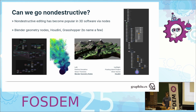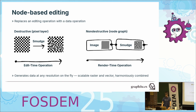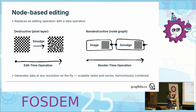Node-based is the second buzzword I mentioned in the introduction. Node-based means that instead of destructively applying an operation to a piece of data, we encode the operation in our document. So we have the smudge operation — just an image and we apply smudge. Regular editing software would just apply the smudge and change the pixels. In a node-based approach, we have an image node which feeds into the smudge node.